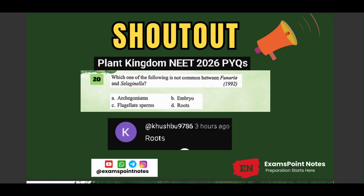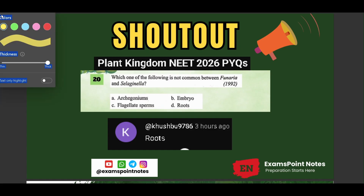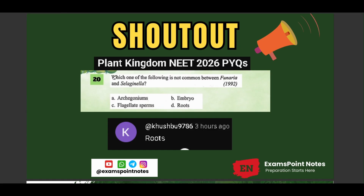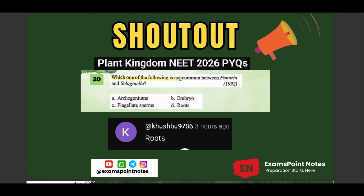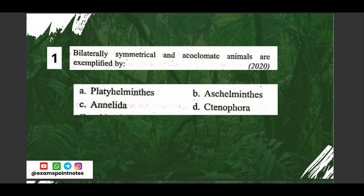Before starting the chapter, let's give a shout out to Khushbu, who gave the right answer to the question asked in the previous video on Plant Kingdom: which one of the following is not common between Funaria and Selaginella? Options were: A) archegonia, B) embryo, C) flagellated sperm, D) roots. The correct answer is option D, which is roots.